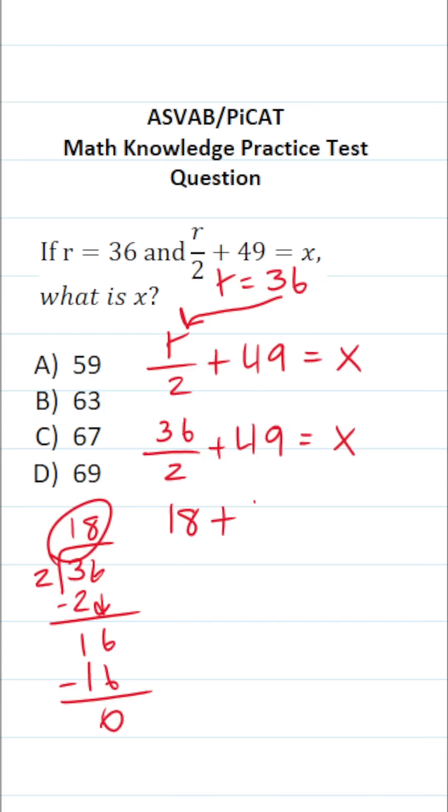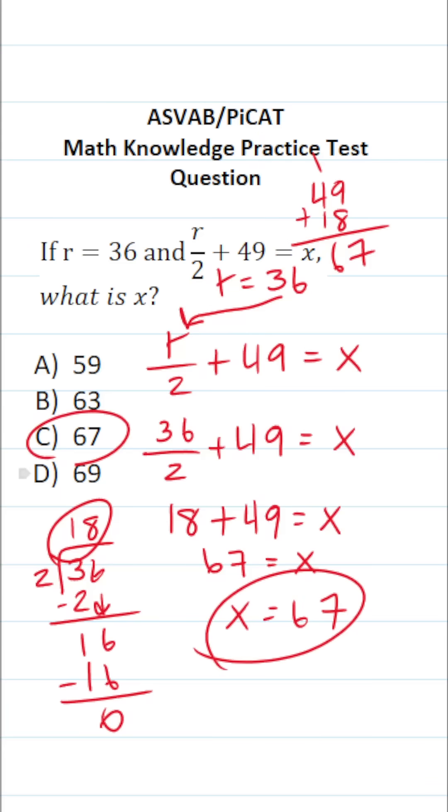This becomes 18 plus 49 equals x, and I'm going to do this math off to the side so as not to make any simple mistakes. And this is 49 plus 18. 9 plus 8 is 17. Bring down a 7, carry a 1. 4 plus 1 is 5, plus 1 is 6. So this is 67 equals x, and if you want to rewrite it you can say x equals 67. So this one is C, of course.